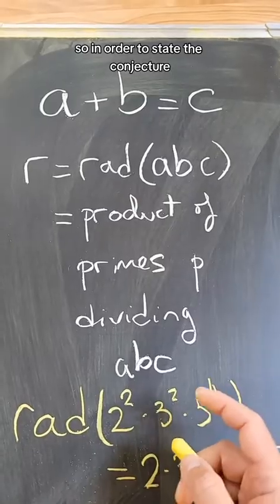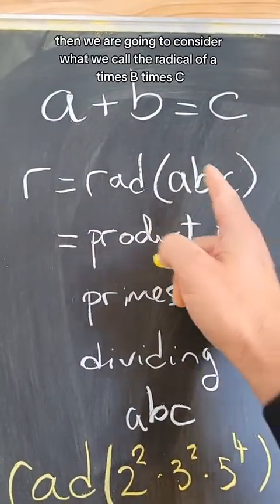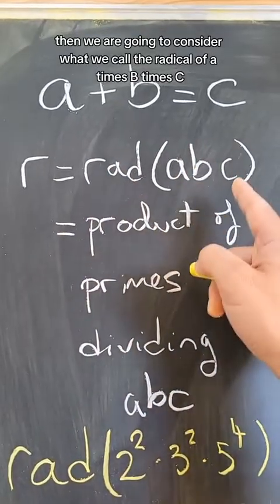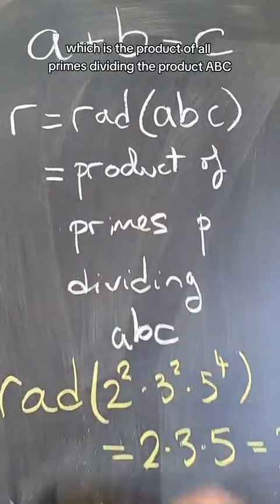So, in order to state the conjecture, if we have a triple a plus b equals c, then we are going to consider what we call the radical of a times b times c, which is the product of all primes dividing the product a, b, c.